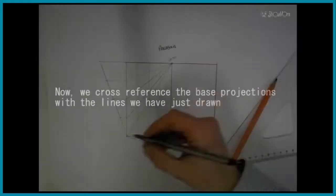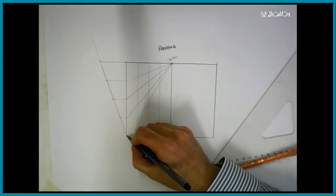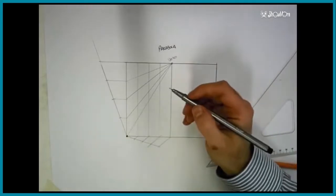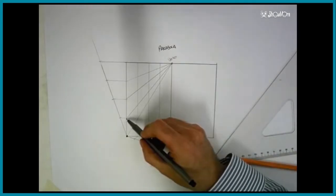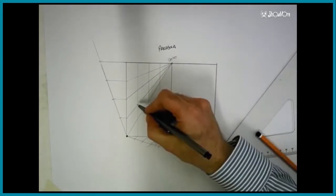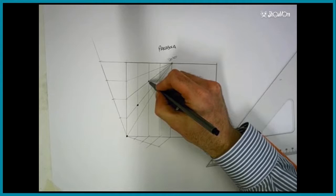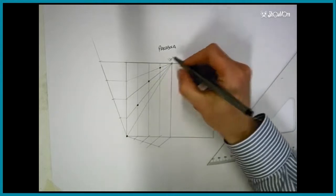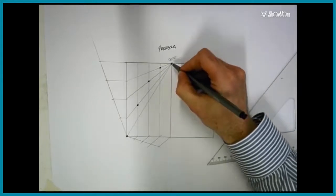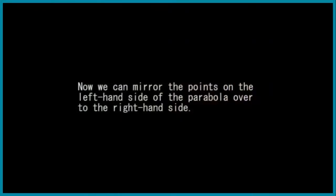Cross-reference these base projections with the lines that we've just joined to the vertex. So for instance, if I go up to my first division and my first width, I can mark those against each other. The second one with the second one and the third one with the third one, and lastly marking the vertex as a point on the parabola.